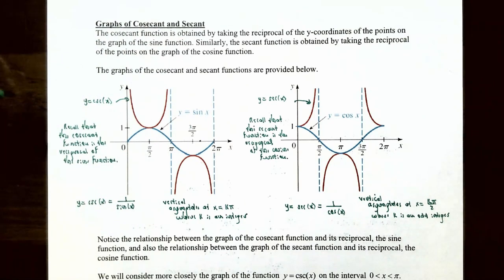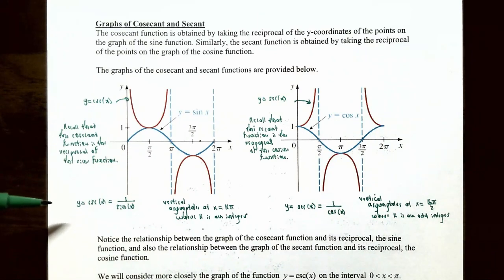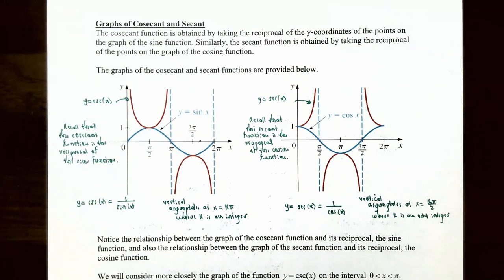The graph on the left is the cosecant function y equals cosecant of x. Recall that the cosecant function is the reciprocal of the sine function, so the cosecant function y equals cosecant of x is really the same function as 1 divided by sine of x. To actually graph the cosecant function it helps to understand the graph of the sine function and then take reciprocals of those values.